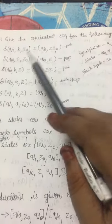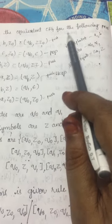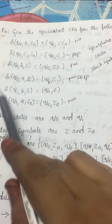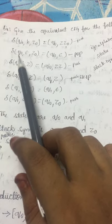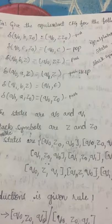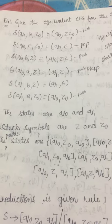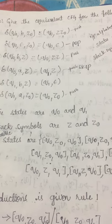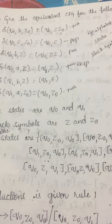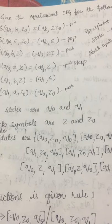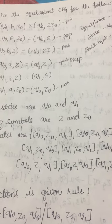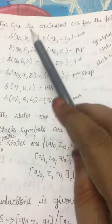The example: give the equivalent CFG for the following PDA. Here, directly the transition rules are given. If the transition diagram is given instead, it is better to first obtain the transition rules and then solve the example — that makes it easier.